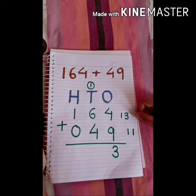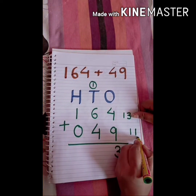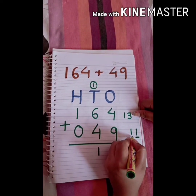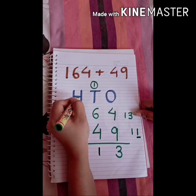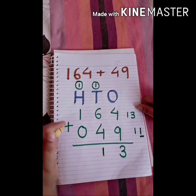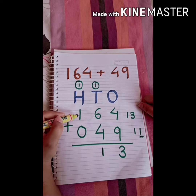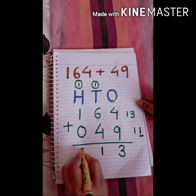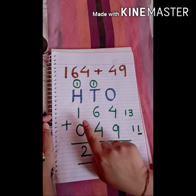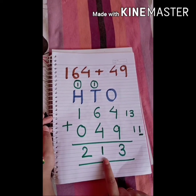We got 11, which is more than 9, so we write the rightmost digit below and carry forward to the hundreds column. Now add the hundreds: 1 plus 0 equals 1, and 1 plus the carry of 1 equals 2. So 164 plus 49 equals 213.